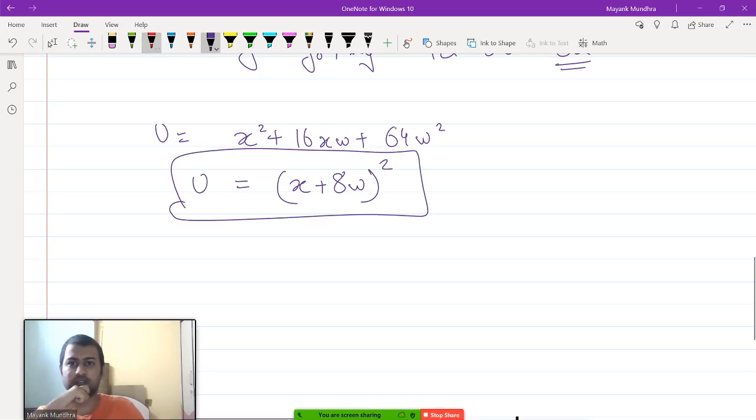Now, what is this part? This part is linear. So, you can write a new utility function v which is √u, which will be just x + 8w.